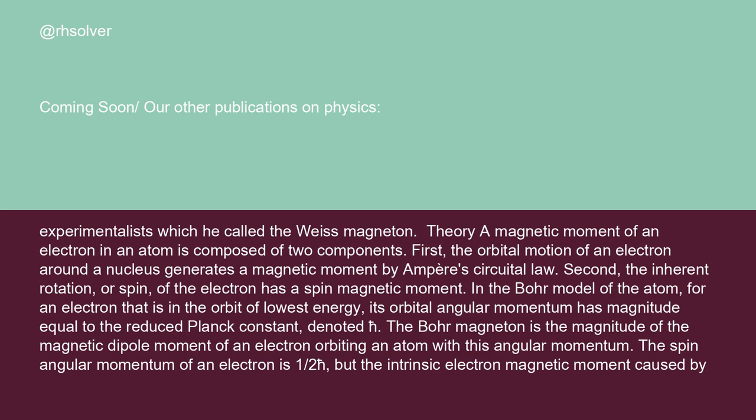The theory of the magnetic moment of an electron in an atom is composed of two components. First, the orbital motion of an electron around a nucleus generates a magnetic moment by Ampere's circuital law. Second, the inherent rotation, or spin, of the electron has a spin magnetic moment. In the Bohr model of the atom, for an electron that is in the orbit of lowest energy, its orbital angular momentum has magnitude equal to the reduced Planck constant, denoted h. The Bohr magneton is the magnitude of the magnetic dipole moment of an electron orbiting an atom with this angular momentum.